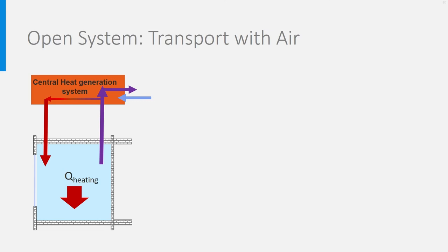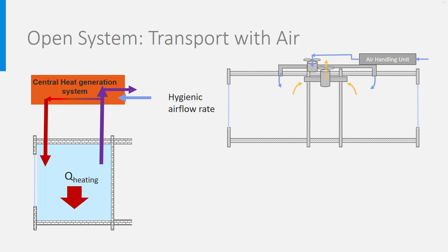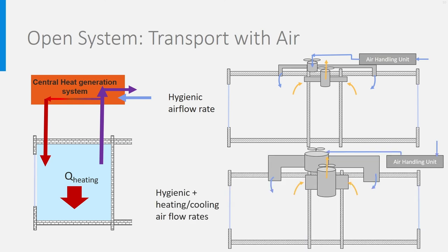Instead, open systems are chosen. The duct is open and ends in the room, delivering warm air which mixes with the room air and is exhausted back through a return pipe — exactly like a mechanical supply and exhaust ventilation system. The only problem is that the volume flow rate of hygienic air is much lower than the flow rate needed to bring heat or cold into the room. So the mechanical ventilation system must be much bigger and the ducts much larger — with important consequences for the architect who needs to reserve enough space.